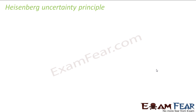Now let us talk about some of the limitations in detail. Let us talk about the Heisenberg uncertainty principle, because we saw that Bohr's theory contradicted Heisenberg's uncertainty principle. So let us see what Heisenberg's uncertainty principle was.